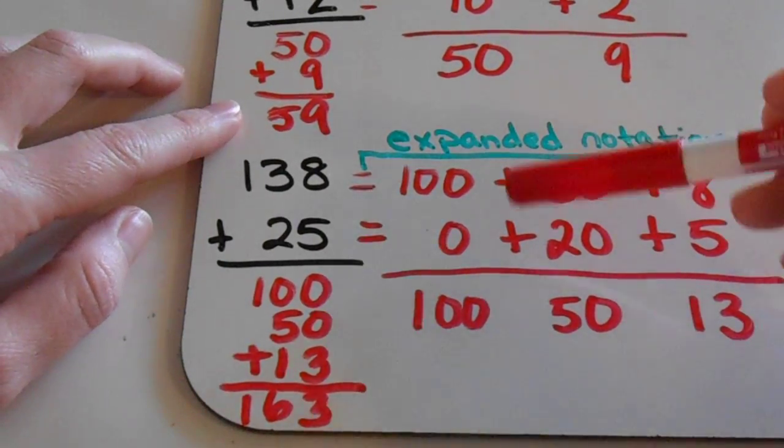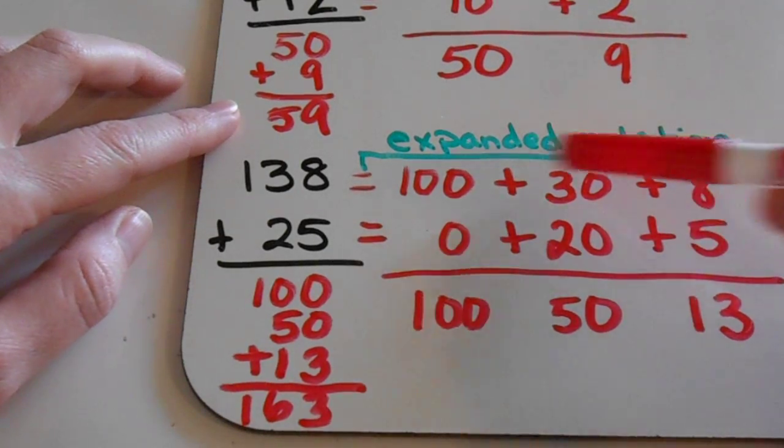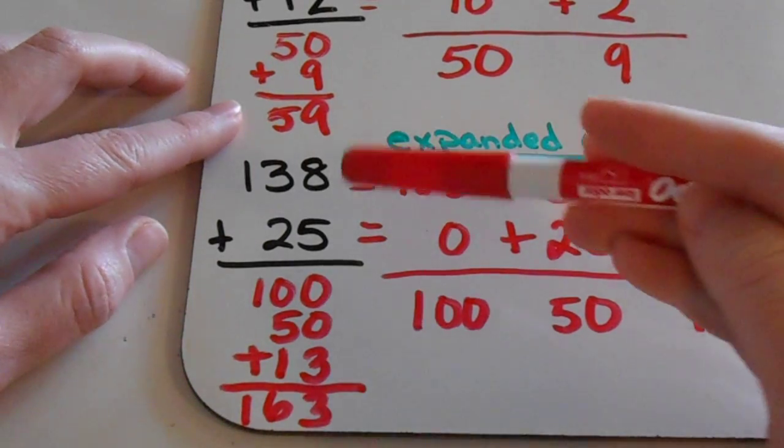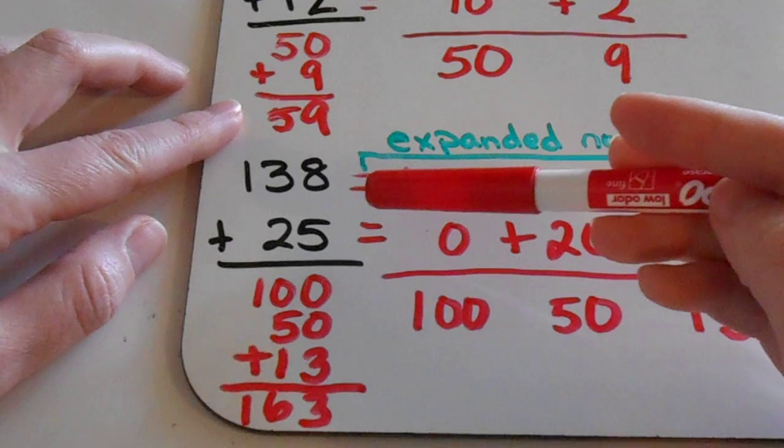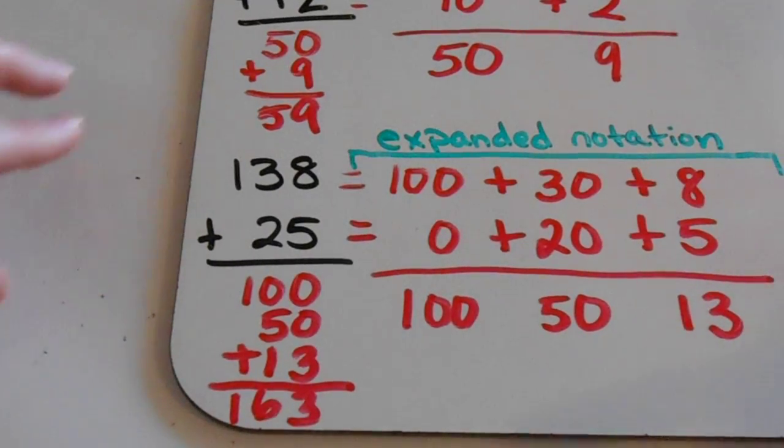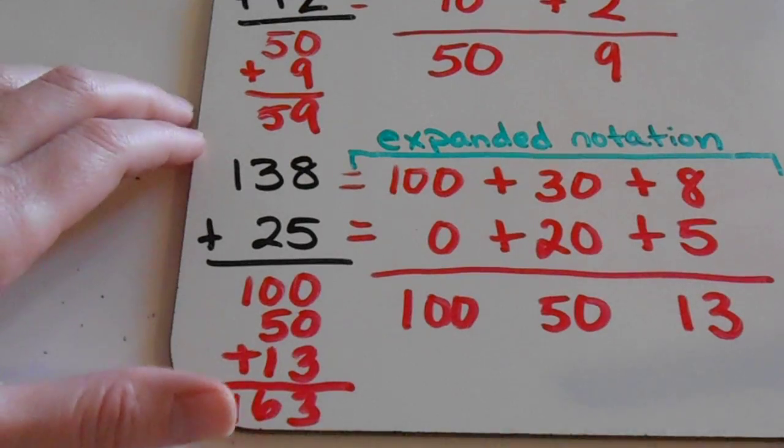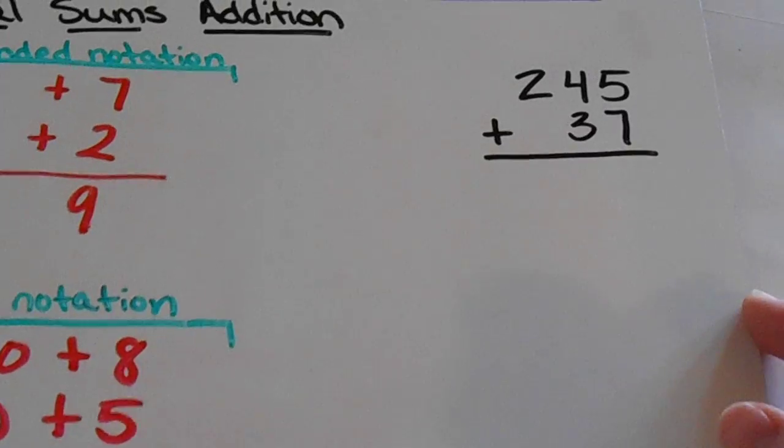Now this is a little bit of extra writing and you actually don't have to write out all of these numbers to the side, but it is a helpful step when you're first learning how to add numbers like this where you have regrouping. But you can just write your answers, your sums, down here underneath the problem. I'm going to show you what I mean with this problem over here.